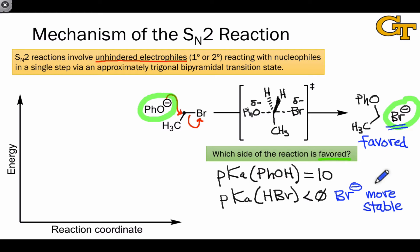This means that the favored side of the reaction is the product side. And this shouldn't be surprising, considering that we've previously identified Br- as a good leaving group.